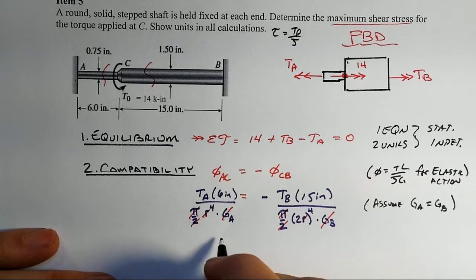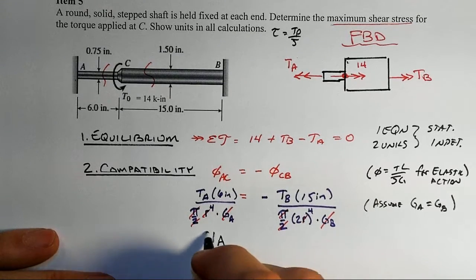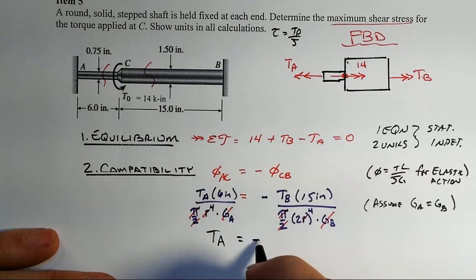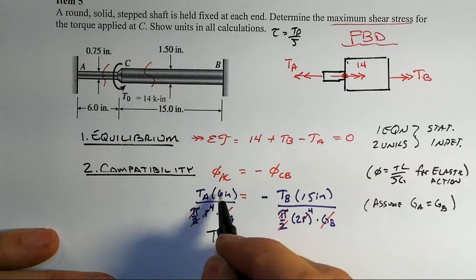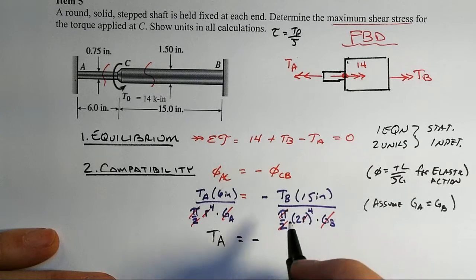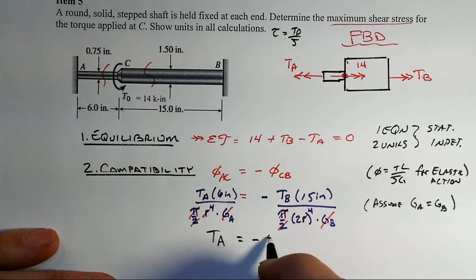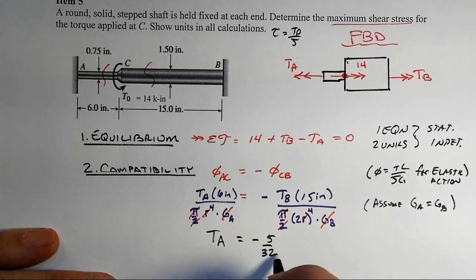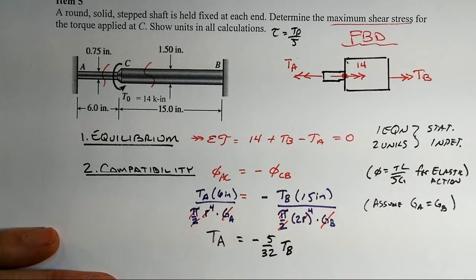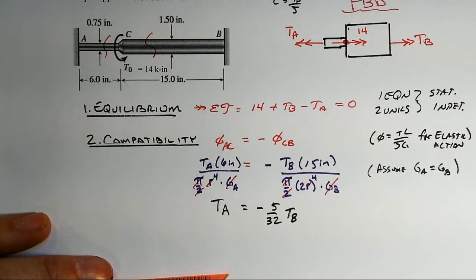So TA is going to be equal to, when you work out the math here, there's a 15 there. 6 comes down, the 4th is a 16. That will turn out to be 5 over 32 times TB for that particular ratio.